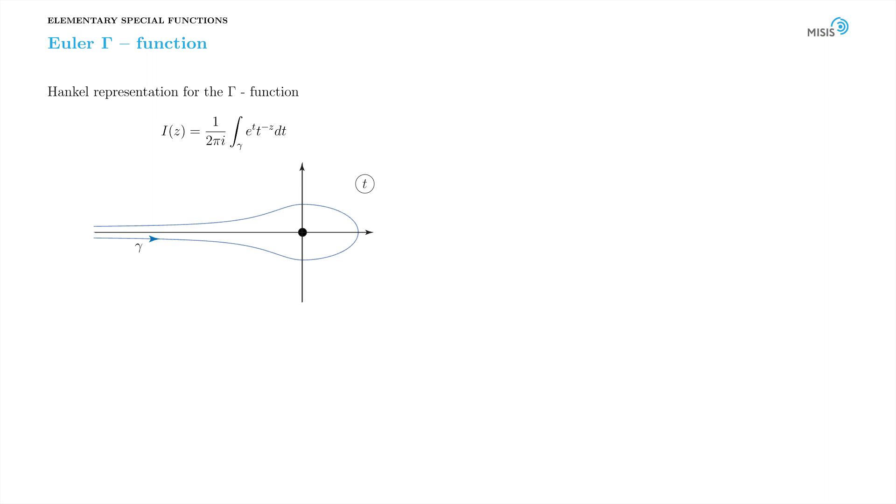So why such an unusual contour? Doesn't the integral cancel when going along the symmetric contour back and forth to minus infinity? It does, but only when the integral is single-valued. The point here is that the integral contains t to minus z, which is a multivalued function.